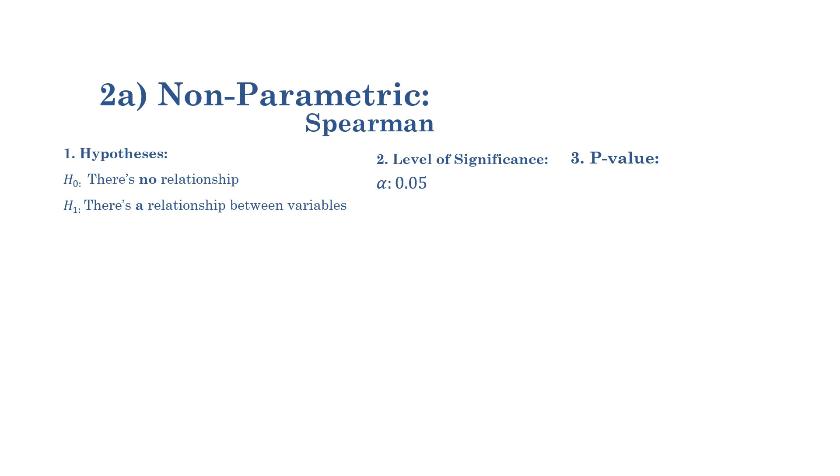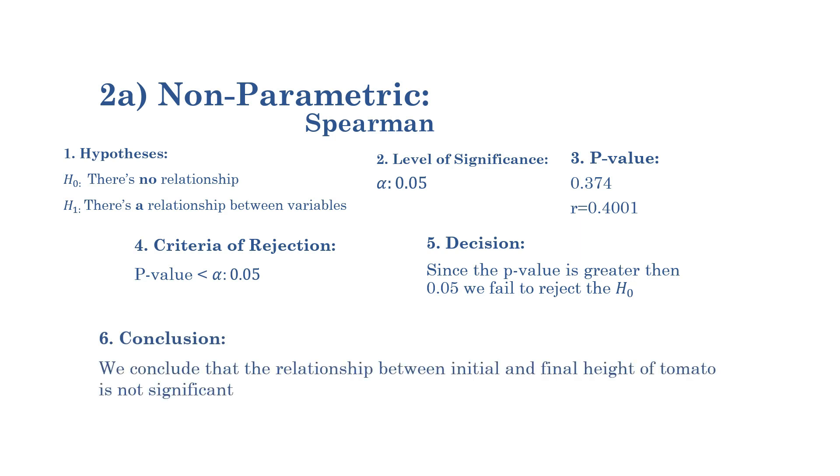Let's read the big six. P-value, it's here already, and the correlation result. Criteria of rejection: p-value is less than 0.05. We can consider this one. The decision: since the p-value is greater than 0.05, we fail to reject the null hypothesis. And conclusion, we conclude that the relationship between initial and final height of tomato is not significant.